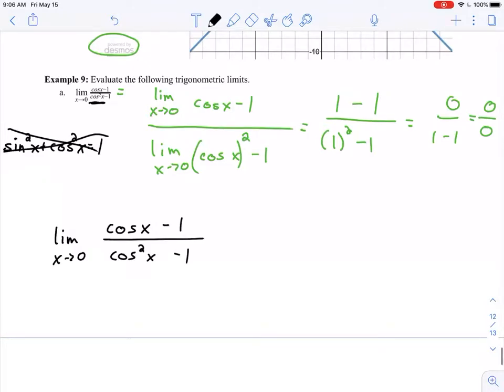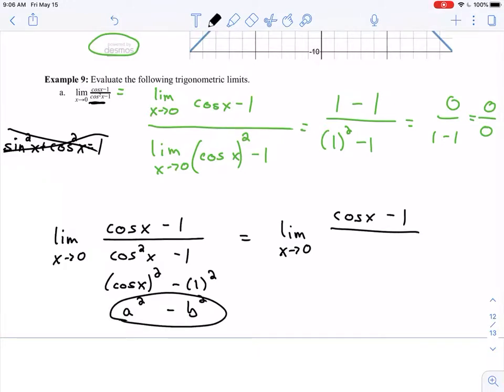Let me rewrite this: limit as x approaches 0 of cosine of x minus 1 all over cosine squared x minus 1. Remember that this is really cosine of x squared. If I look at that denominator, that's cosine of x squared, and 1 is also a perfect square, 1 squared. This is really a squared minus b squared, a difference of two perfect squares. So in my denominator, I should have cosine of x plus 1 times cosine of x minus 1.